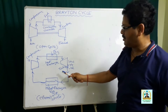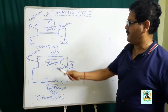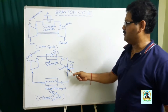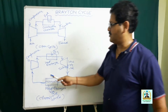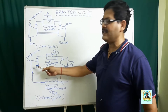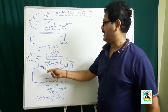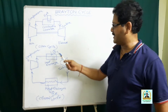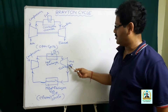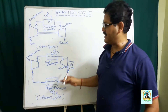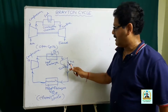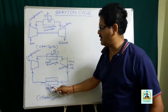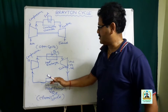When it comes to the closed cycle, you do have a compressor, two sets of heat exchangers, and a turbine. First, the gas is taken into the compressor where it is compressed. After that it is taken to the heat exchanger where heat is added to the working substance. Then it is taken to the turbine where it expands and does some mechanical work, and finally it is sent back to the compressor via the heat exchanger where heat is ejected to the surroundings.